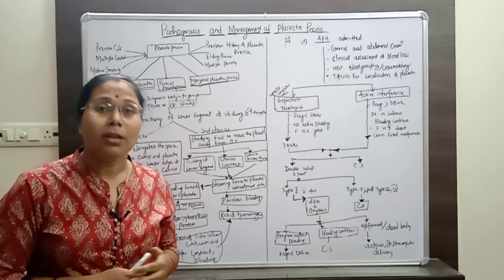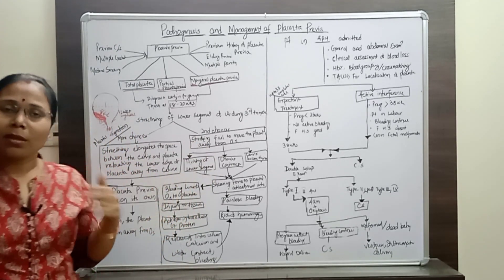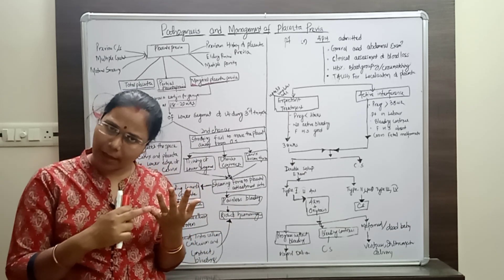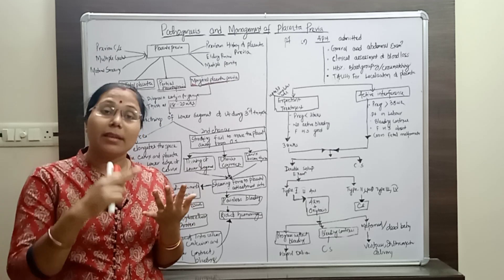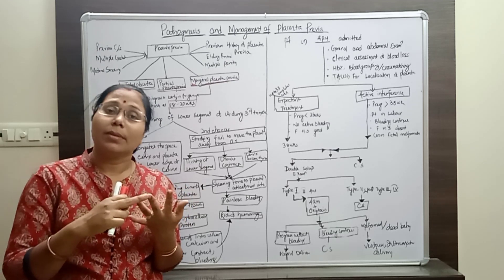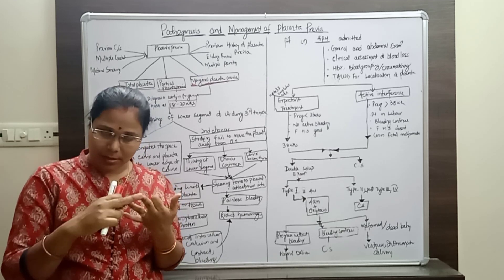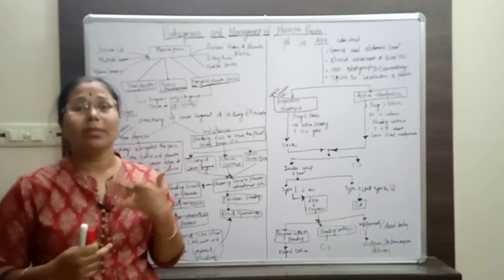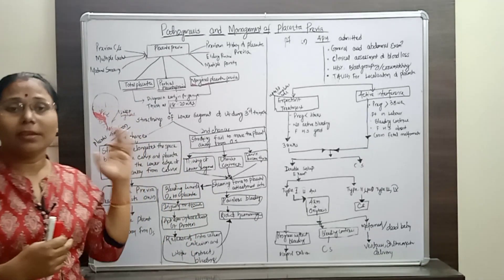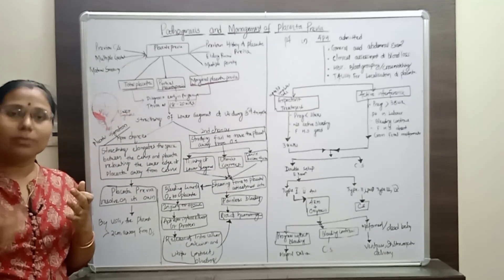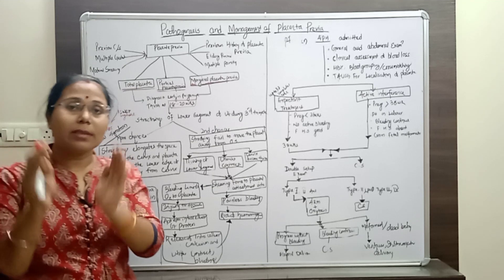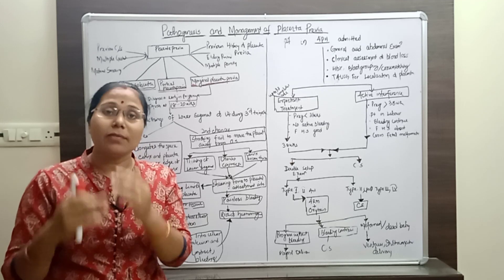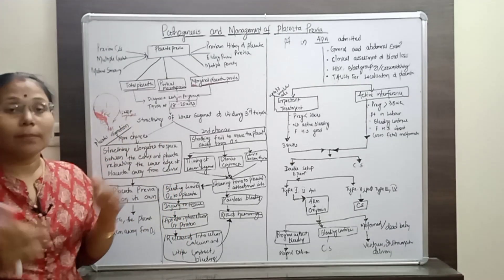After knowing the pathogenesis, we look at complications of placenta previa. There are complications on both the maternal and fetal sides. On the maternal side, complications occur during the antenatal period, during delivery (intranatal), and sometimes in the postpartum period. On the fetal side, due to detachment, bleeding, or hemorrhage, the supply of oxygen and nutrients to the baby decreases, causing intrauterine growth retardation and sometimes intrauterine death.